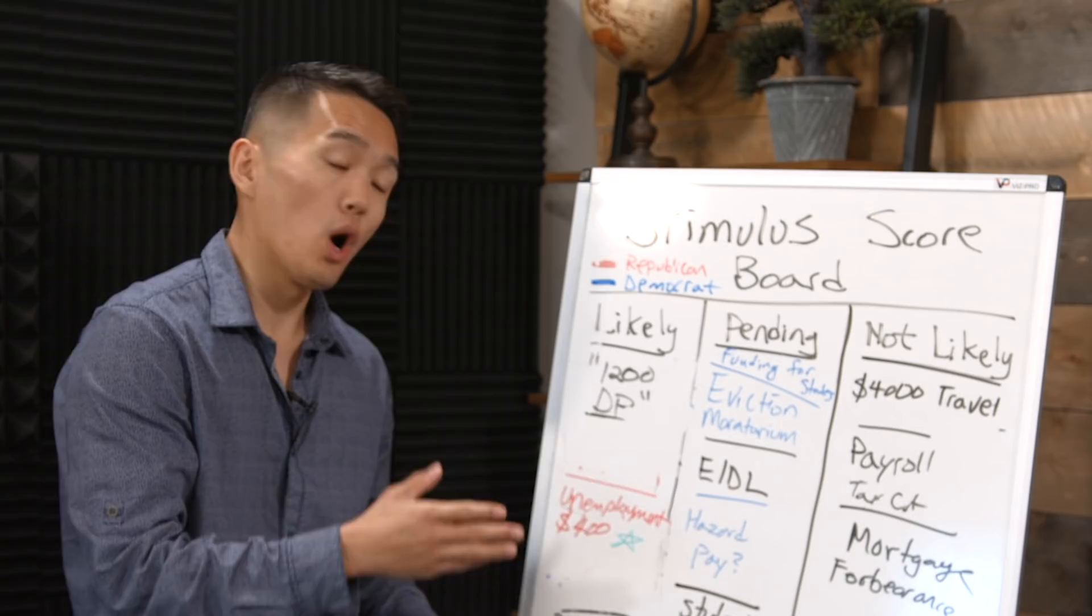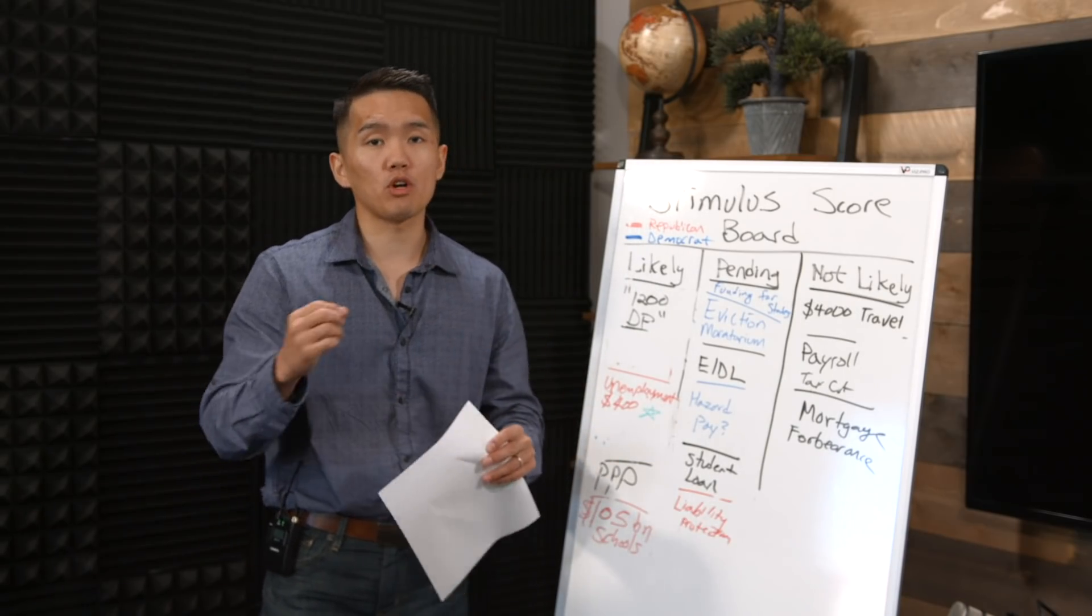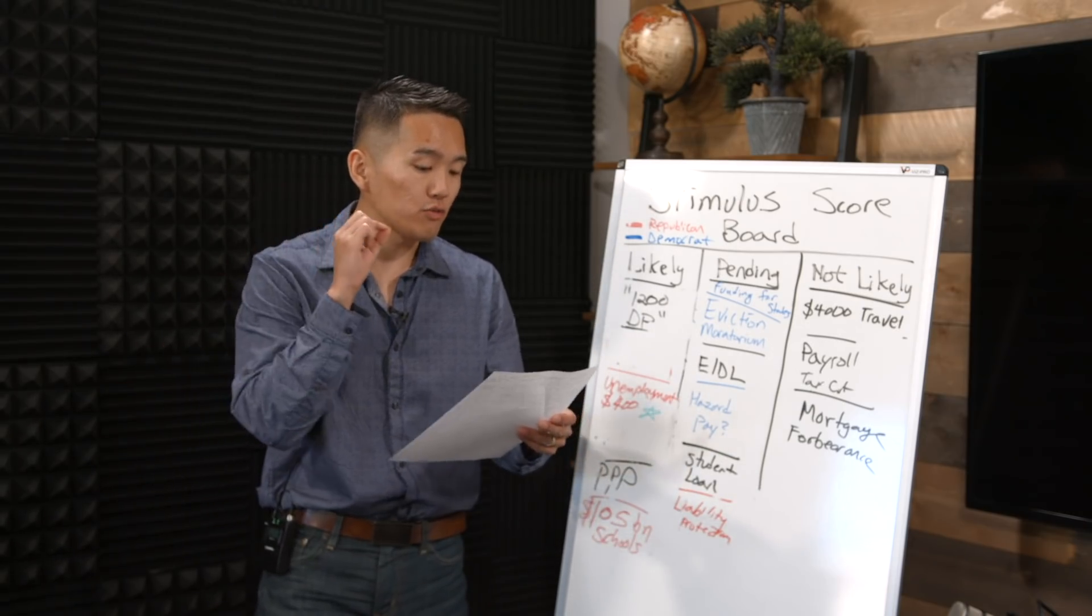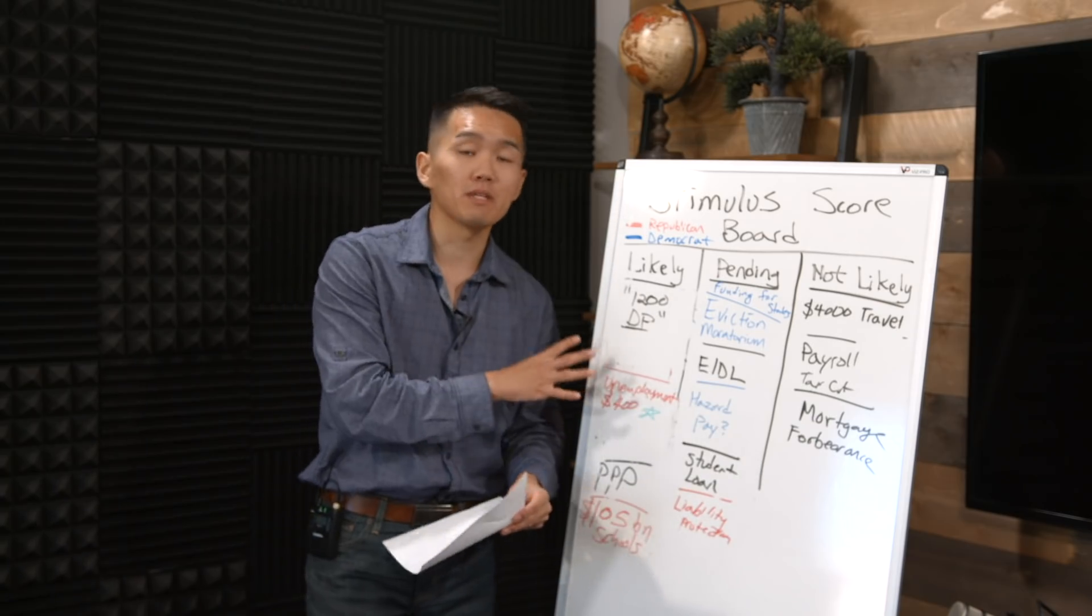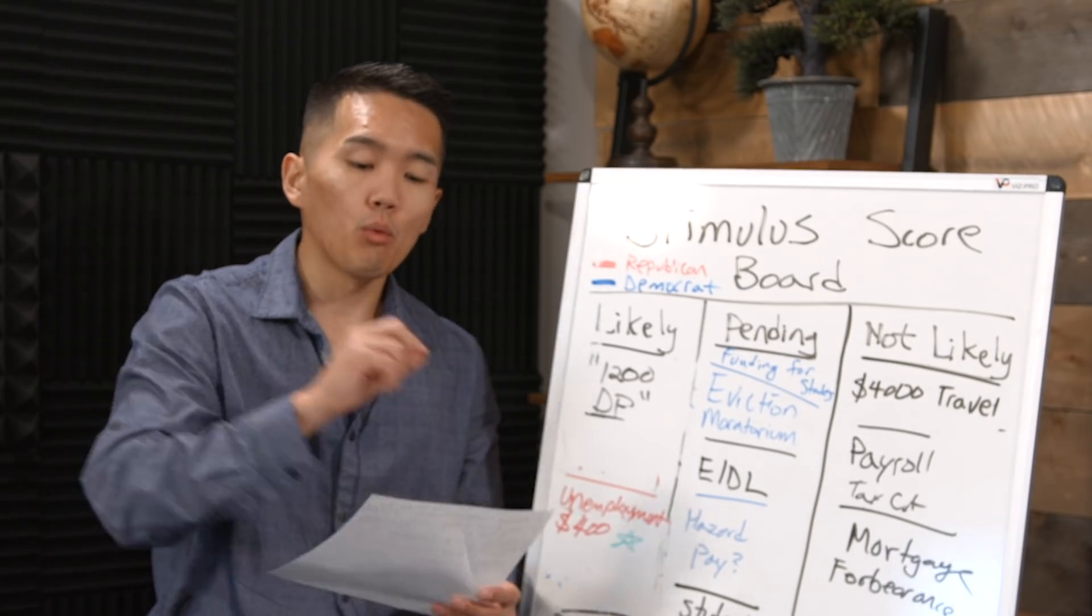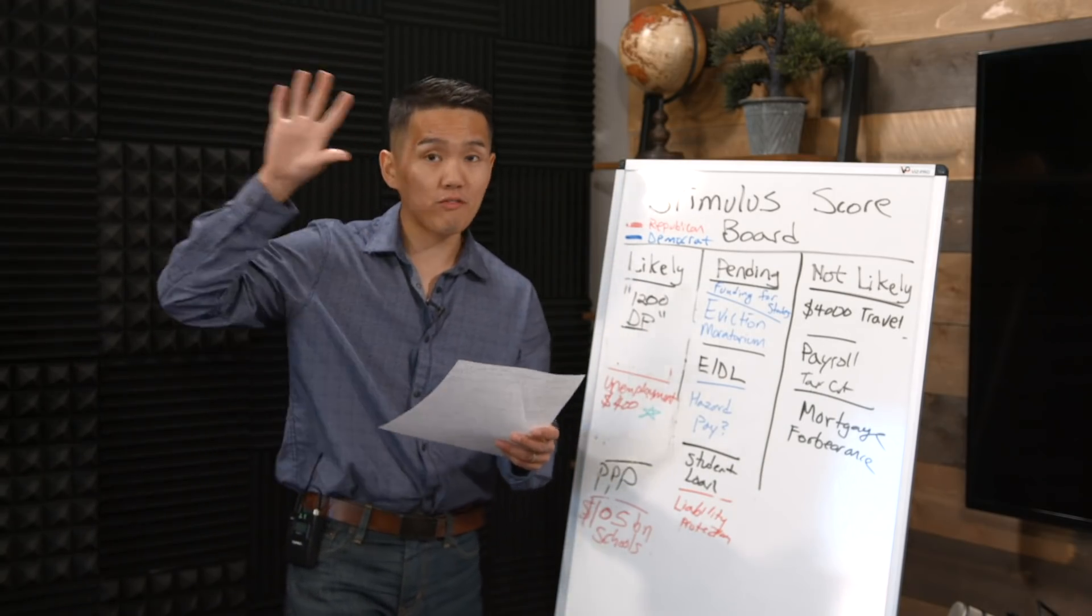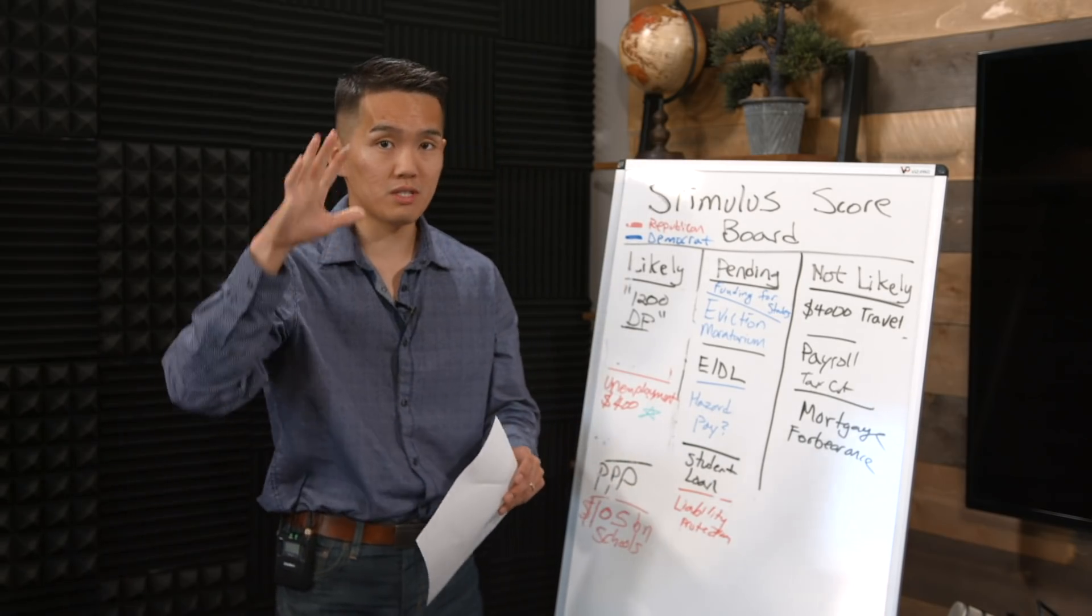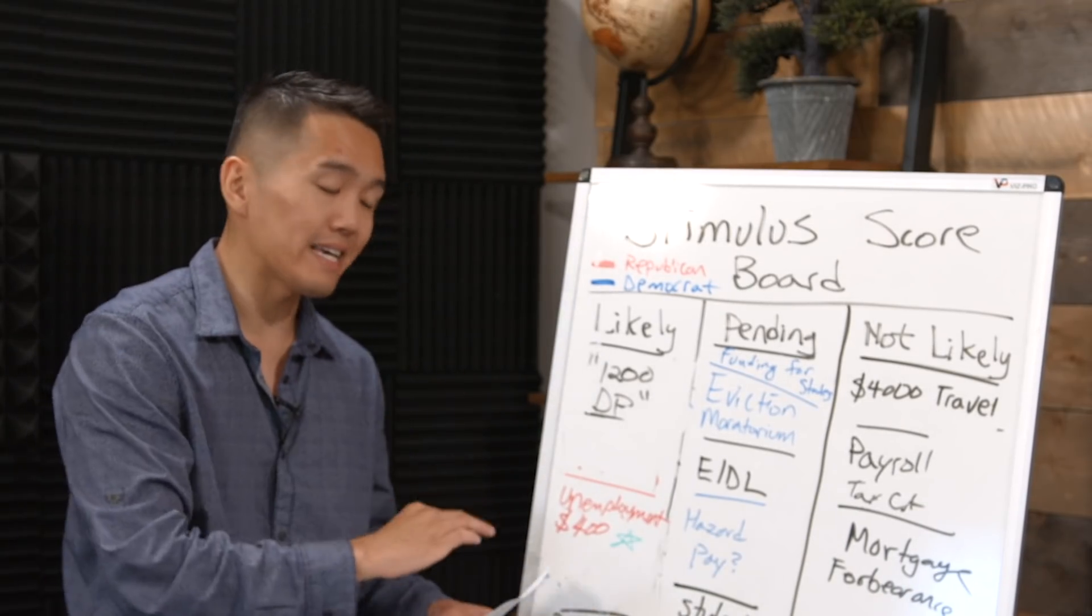A couple of questions that you probably have: where is the money coming from, and how long is the extension? Funding for most of the executive orders that President Trump signed is coming from the FEMA fund, which is generally used for natural disasters like hurricanes. There's $44 billion in the FEMA fund that will be reappropriated to cover some of the executive order funding. The extension of $400 a week unemployment benefit will last until December 6, or if the funds drop to $25 billion.